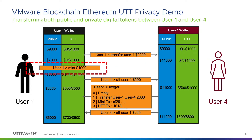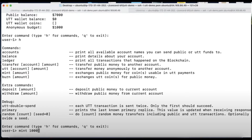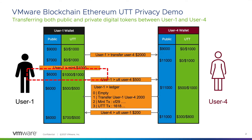User 1 now wants to privately transfer one thousand dollars to User 4, and this is done in two steps. Step number one: User 1 needs to mint a thousand dollars, which means that one thousand dollars of his public funds is now stored on the UTT private side, and you see an increase of one thousand dollars in his wallet.